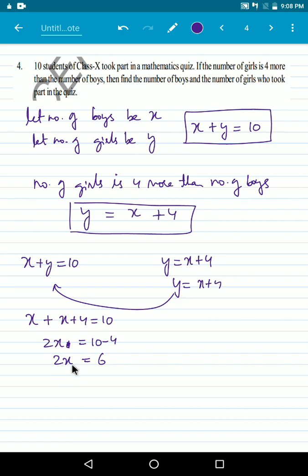So 2x will be equal to 6. x will be equal to 6 by 2. This 2 goes on the other side, it will divide. So x is equal to 3. 6 by 2 is equal to 3. So the number of boys are 3.